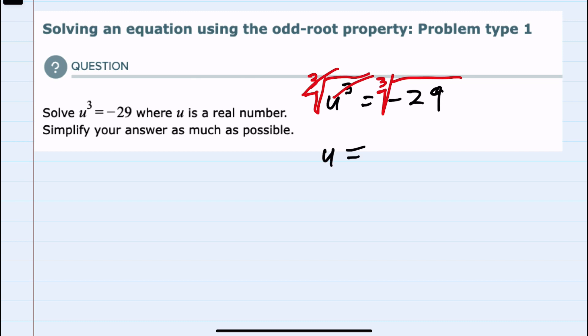And then on the right hand side, since I have an odd root and a negative number underneath that cubed root, I can bring the negative outside of the cubed root.